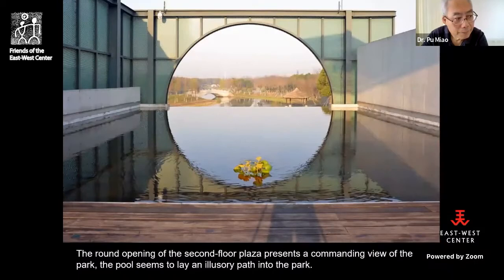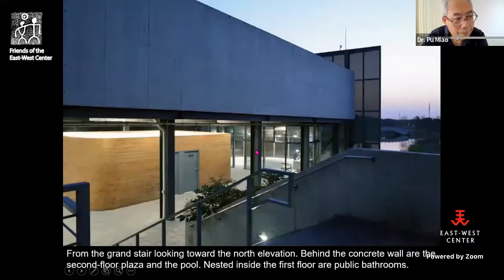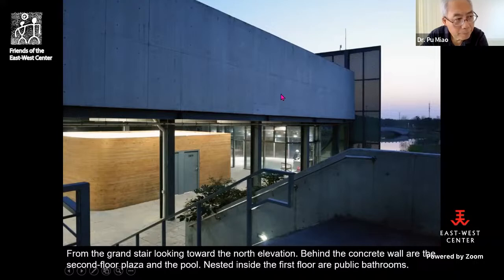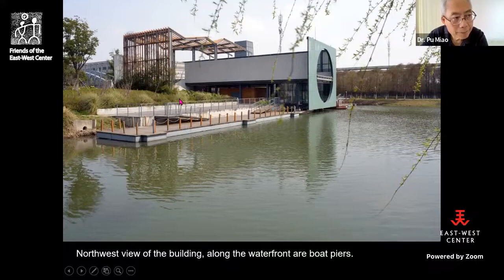This is the illusory path into the park. People gradually realize they have to use another path — on their right side is a grand stair that comes down. The temporary delay increases the mystery. Coming down the grand stair, you reach the first floor: the public bathroom, the glass cylinder containing the shop, and behind the concrete wall is the pool we saw earlier. There are also boat piers and bicycle rentals on this part of the first floor.